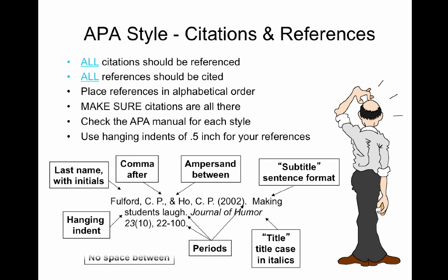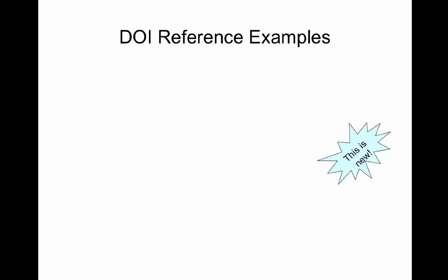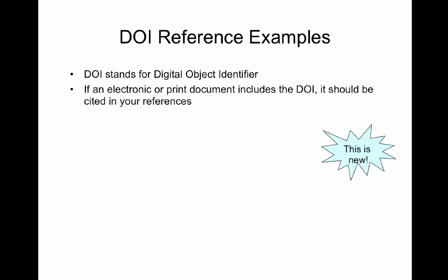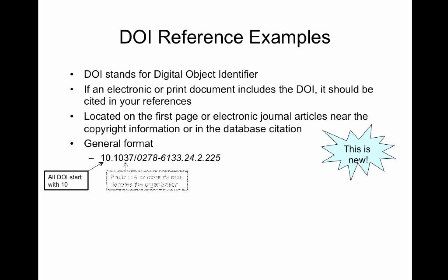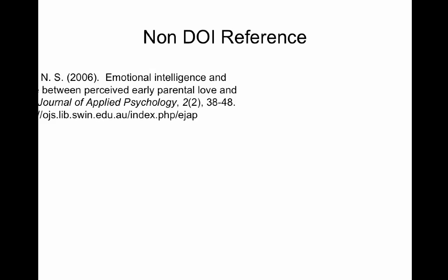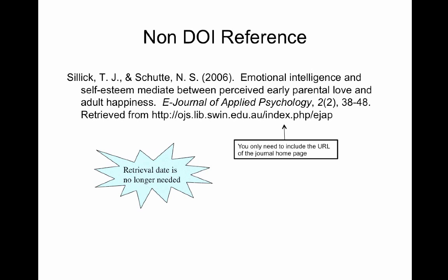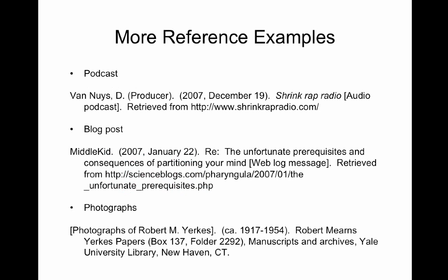DOI reference examples — this is new in the 6th edition. DOI stands for digital object identifier. If an electronic or print document includes the DOI, it should be cited in your references. It's located on the first page of electronic journal articles near the copyright information or in the database citation. All DOIs start with the number 10. The prefix is four or more numbers and denotes the organization; the suffix is assigned by the publisher. Non-DOI references would look like this — you only need to include the URL of the journal homepage. Notice in the 6th edition, the retrieval date is no longer needed.